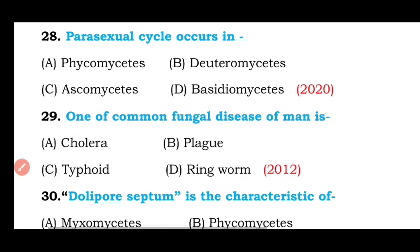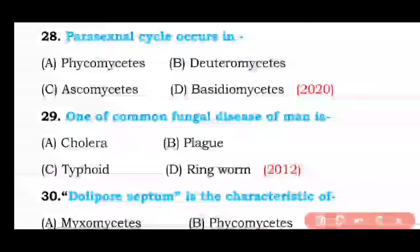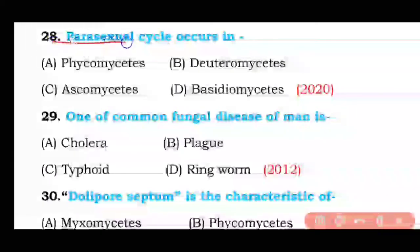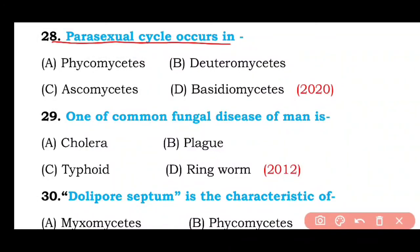Question number twenty-eight: Parasexual cycle occurs in Phycomyces, Deuteromyces, Ascomyces, or Basidiomyces? The correct answer is option B — parasexual cycle is present in Deuteromyces, and they have no sexual reproduction.